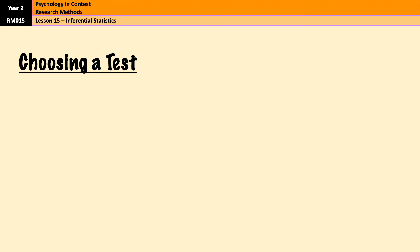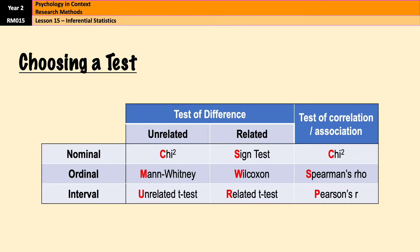So that brings us on to actually choosing the test. There is no easy way to do this — you will just have to learn it. This is your table that I would suggest you learn. You have your levels of measurement down the side: nominal, ordinal, and interval, in order of sophistication. Nominal is the least sophisticated and interval is the most sophisticated.